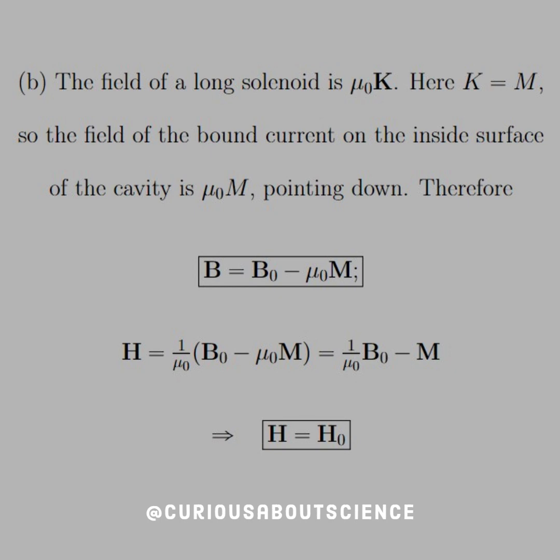Therefore, B is equal to B-naught minus mu-naught M. And we simplify through once again, showing that H equals H-naught. That makes sense—we don't have any material there.